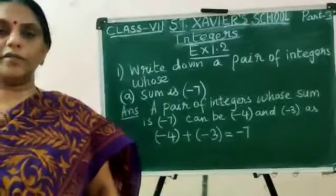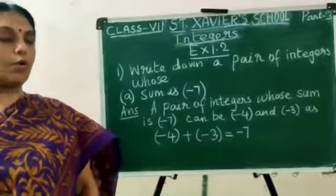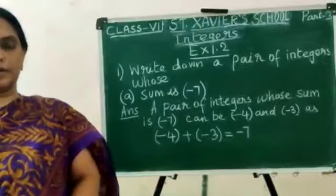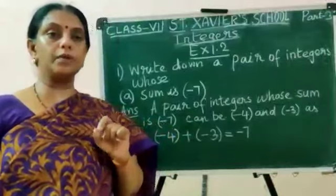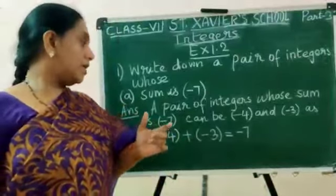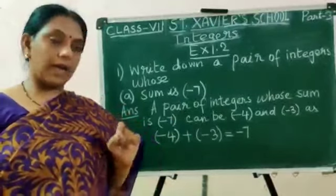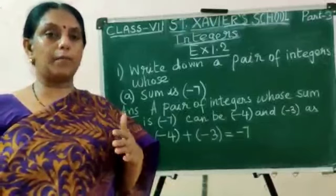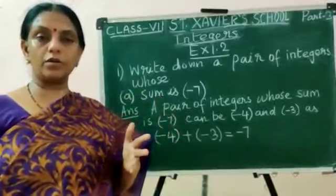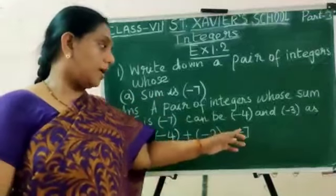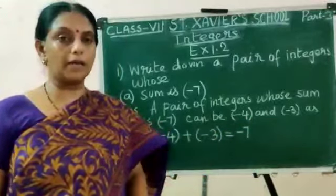Now we will go for exercise 1.2. Write down a pair of integers whose sum is minus 7. That means two integers with an addition symbol between them. A pair of integers whose sum is minus 7 can be minus 4 and minus 3, as minus 4 plus of minus 3 equals minus 7. It may be any other number also, like minus 2 and minus 5.